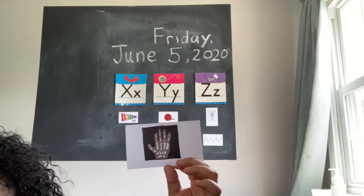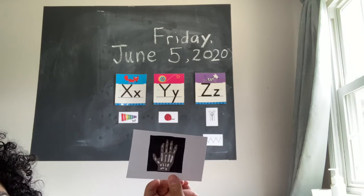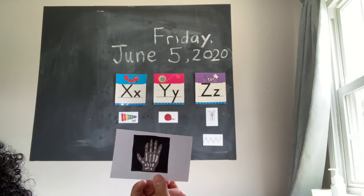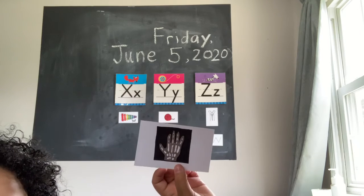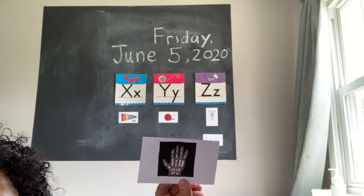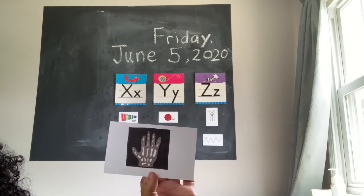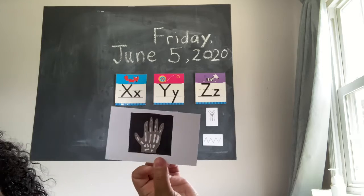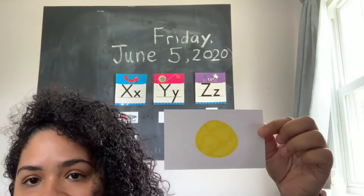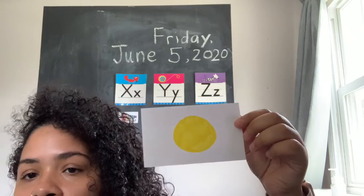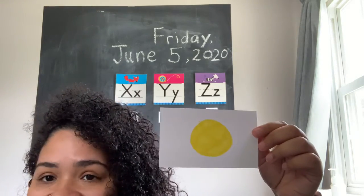Next one we have is x-ray. Do you hear the letter X sound in x-ray, like fox and xylophone? Do you hear a Y sound, like yo-yo and yarn? Or do you hear a Z sound, like zebra, zipper, and zigzag? I hear X in x-ray, so I'm going to go ahead and put it under the letter X.